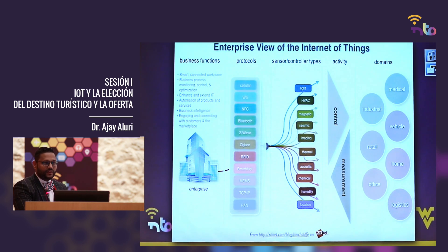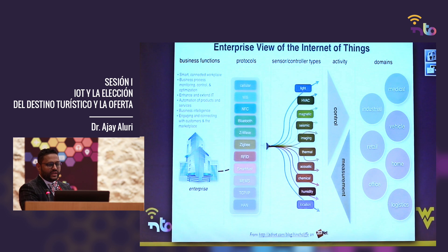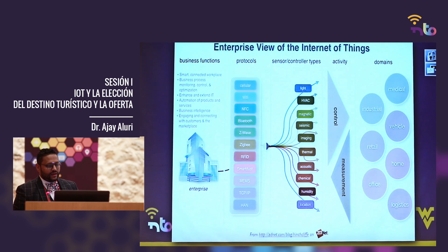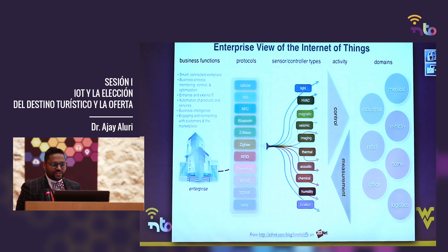All these different domains — smart city, retail, office, logistics, home, vehicle, medical — you have to control and measure these things using different protocols. IoT uses all these different protocols: not just cellular Wi-Fi, but also Bluetooth, Z-Wave, ZigBee, MEMS, TCIP, HANs. These different networks are used to create experiences and use different sensor and controller types as well, which is very important for understanding the broader spectrum of IoT.